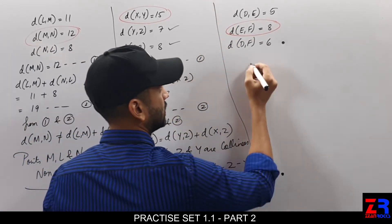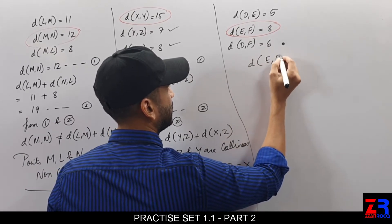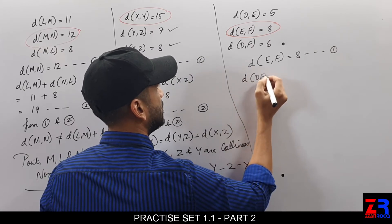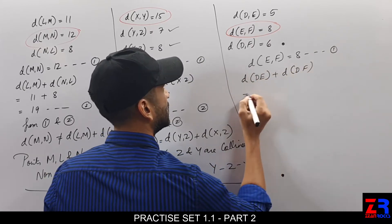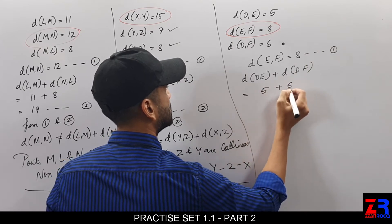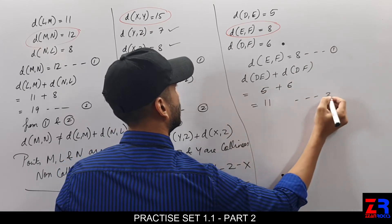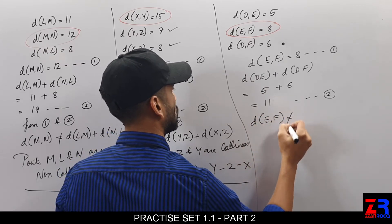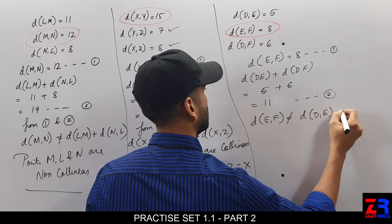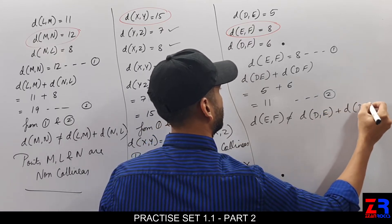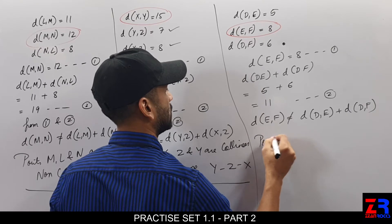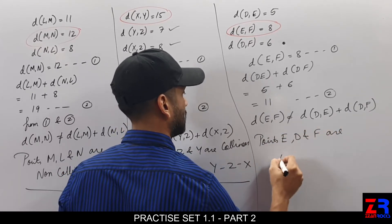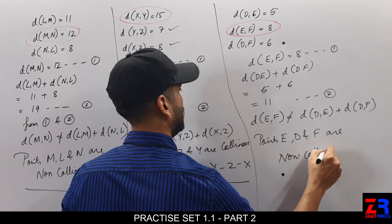Next, the last sub-question. Distance EF equals A (equation 1). Distance EB plus distance BF equals 5 plus 6, which is equal to 11 (equation 2). Distance EF is not equal to distance EB plus distance BF. That means points E, B and F are non-collinear.